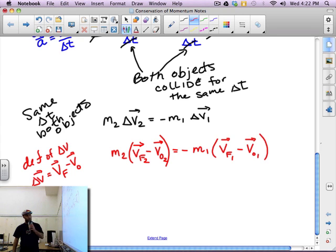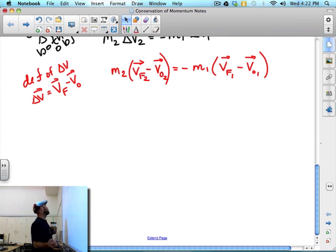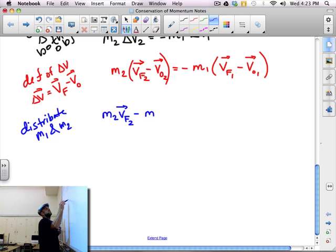Cool. So now, let's distribute m1 and m2. So we have m2 v final object 2, minus m2 v initial object 2. That's to equal negative m1 v final object 1, plus,